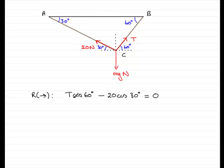Okay, so there's our equation. All we need to do now is rearrange it and make T the subject. So if I add 20 cos 30° to both sides and divide by cos 60°, we're going to have T equals 20 cos 30° all divided by cos 60 degrees.